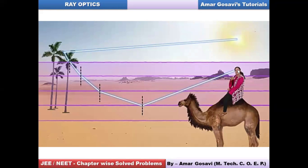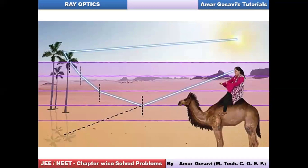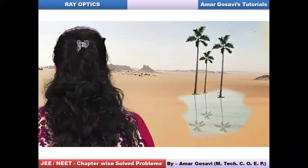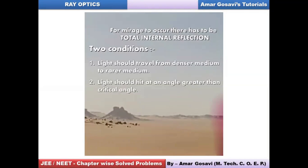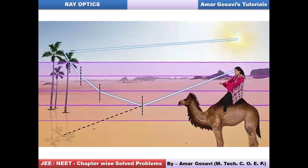An inverted image is formed in the observer's eyes. The brain interprets the inverted image of the tree along with the blue color of the sky as a water body nearby. The observer proceeds in that direction but upon arrival finds nothing — it was just a mirage.